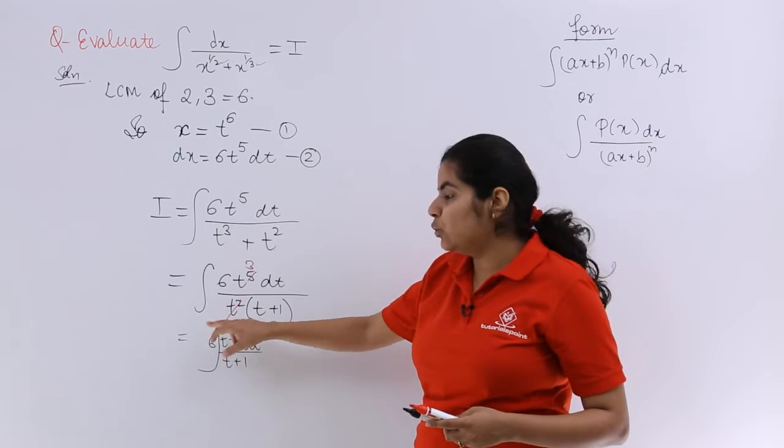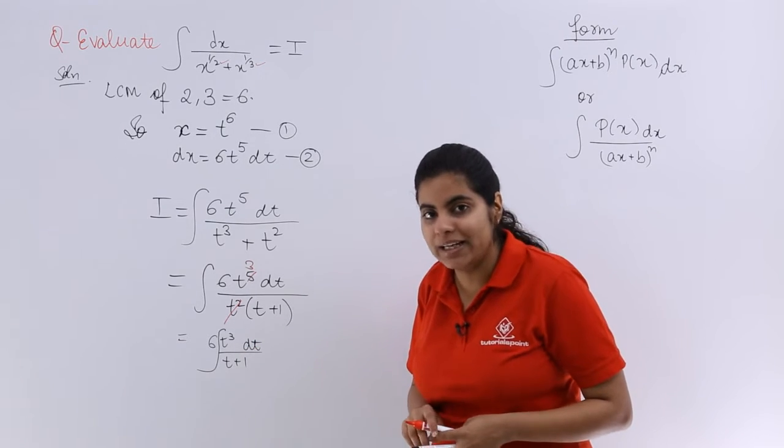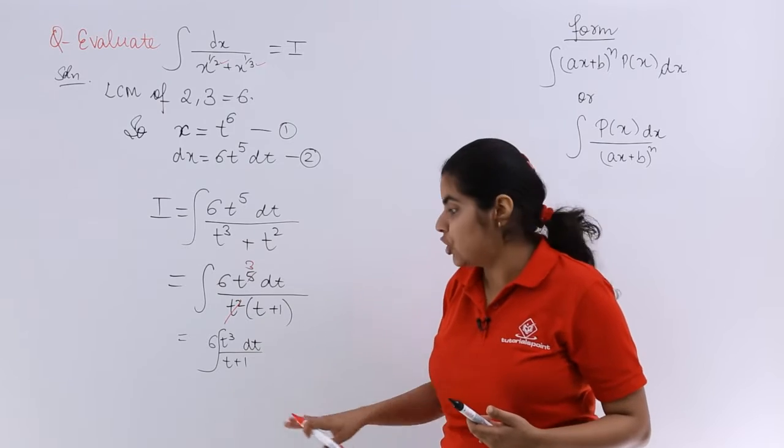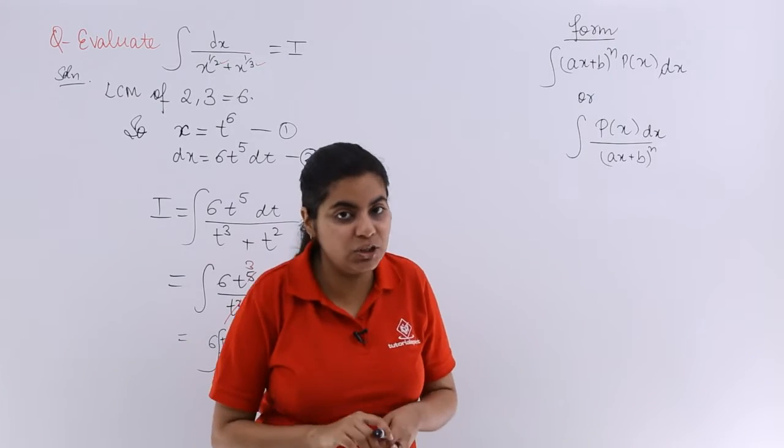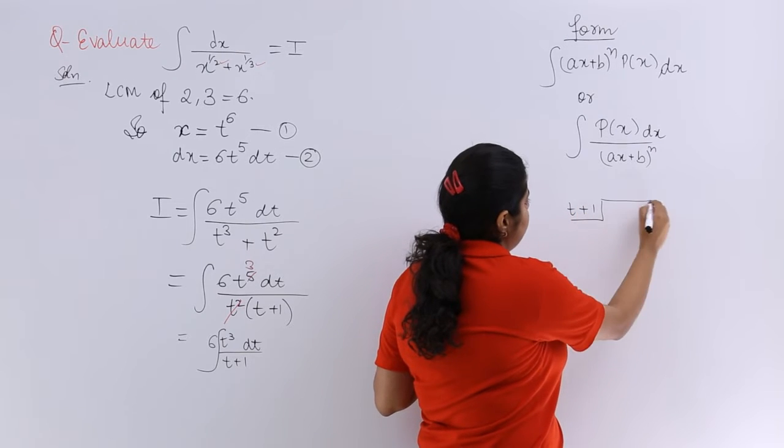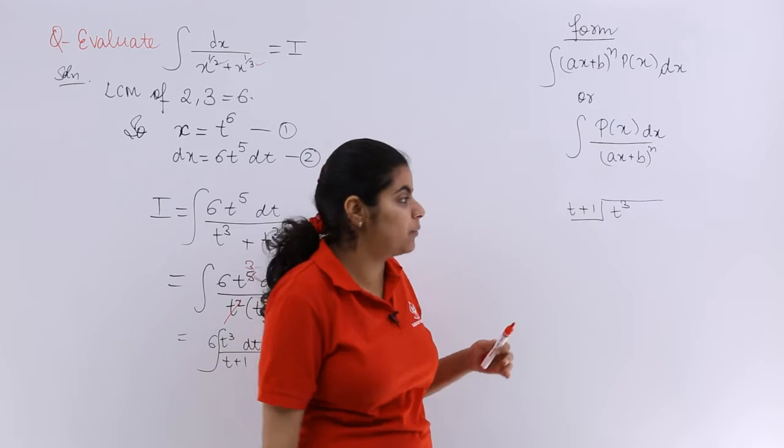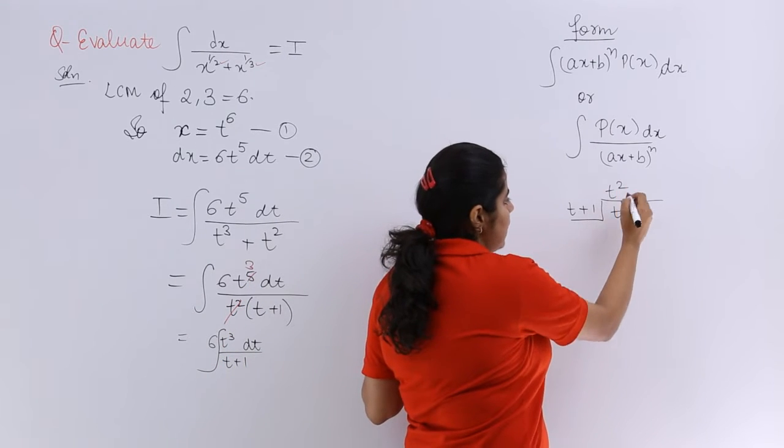Denominator and numerator. See the degree, the degree of the numerator is greater than that of the denominator. So you have to go for long division. So t plus 1 and t cube is there. So if I have t plus 1 and t cube too, how would the division go about like? So it would be nothing but t square here.